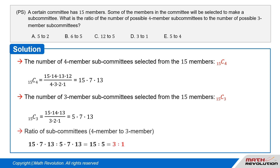The ratio of the number of four-member subcommittees to the number of three-member subcommittees is 15 times 7 times 13 to 5 times 7 times 13, which equals 15 to 5, which equals 3 to 1. Thus, the ratio is 3 to 1, and D is the correct answer.